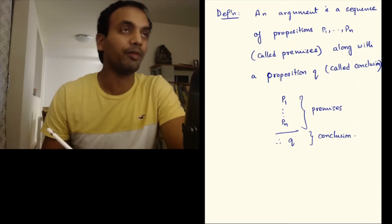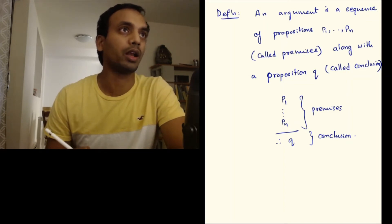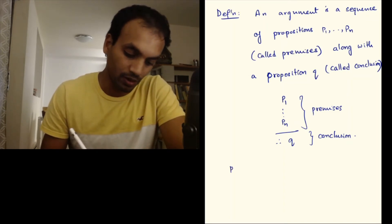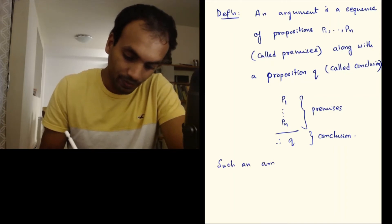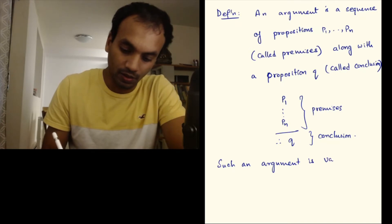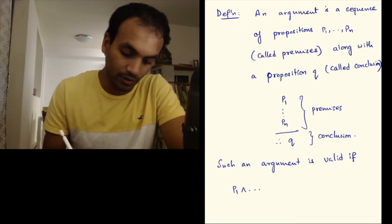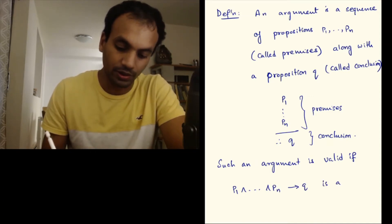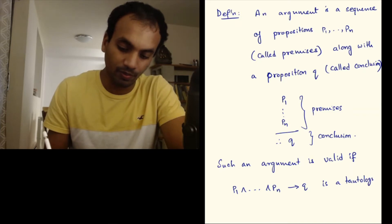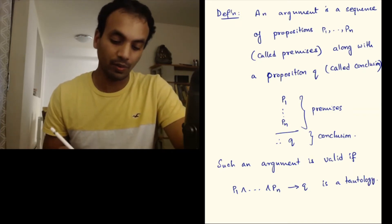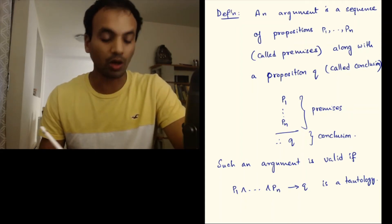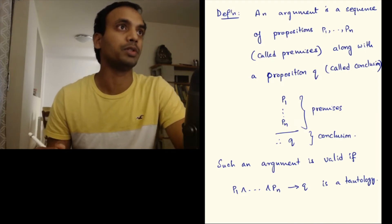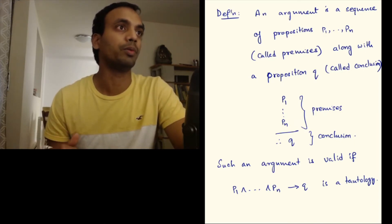Not every argument is valid, so we define what it means for an argument to be valid. We say that such an argument is valid if p1 and so on up to pn implies q is a tautology. What this means is that no matter what truth values you put in p1 to pn and q, this should always be true. That's what tautology means — a compound proposition which is true no matter what the truth values of the variables are.